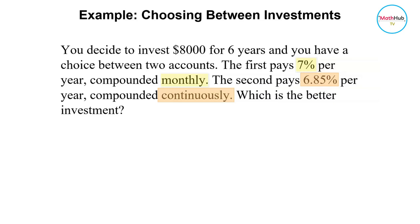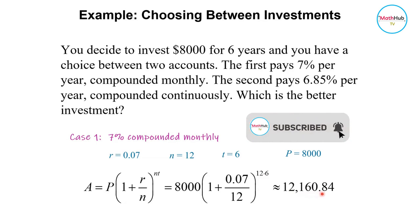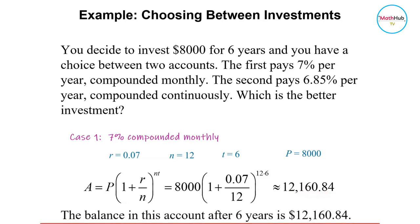For the first scenario, we have a rate of 7%, so that is 0.07 in decimal form. This is compounded monthly, so n equals 12, and t is 6 years. Substituting into the formula: A = 8000(1 + 0.07/12)^(12×6). Computing this, you get $12,160.84. That is the balance in the account after 6 years.